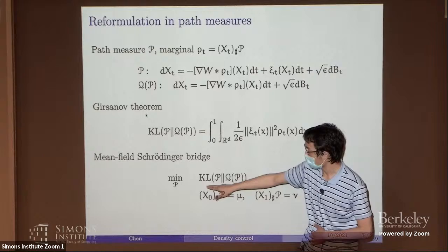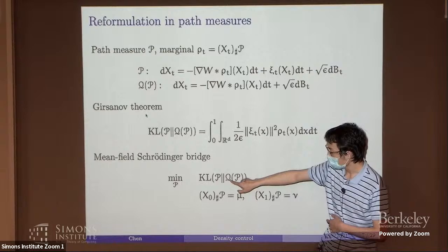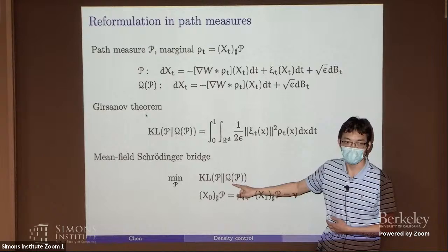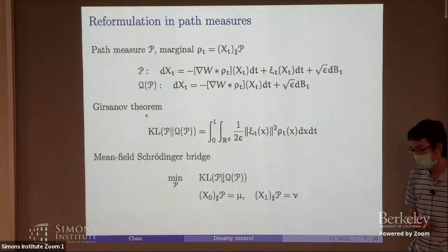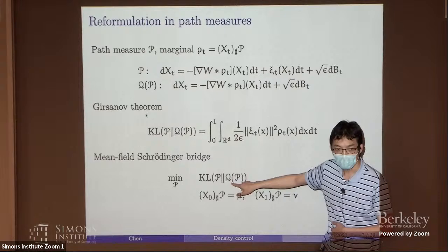This is very similar to the standard Schrödinger bridge problem, except that here the prior process Q depends on your solution P. In the standard Schrödinger bridge, Q is a fixed prior process and you find the process P closest to Q that is consistent with the marginals. But here the prior process depends on your solution, which is a major difference and makes this problem much more complicated.